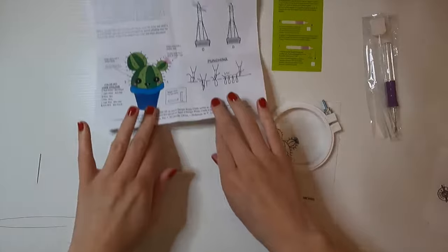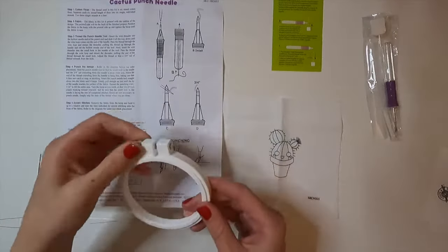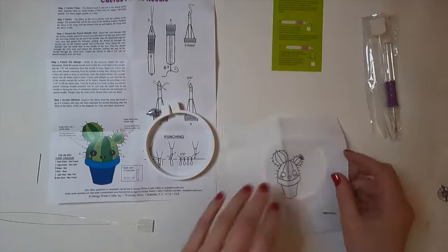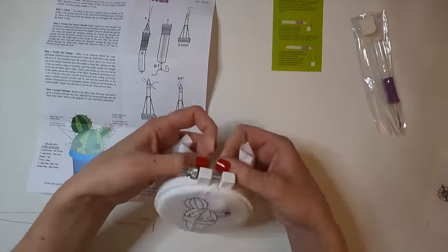So getting started for real this time, it's time to put the fabric onto the embroidery hoop and pull it taut.